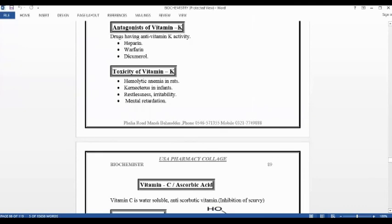Antagonists of vitamin K. Drugs having anti-vitamin K activity: Heparin, Warfarin, and Dicoumarol. Antagonist means opposite. Antagonistic pairs like biceps and triceps - one's function is opposite to the other. Similarly, these drugs have anti-vitamin K activity.